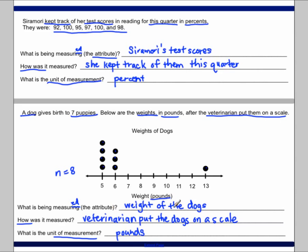So this is pounds. So we're measuring the weight of the dogs. The weight of the dogs was measured by the veterinarian by putting them on the scales. And then the unit of measurement is in pounds. That weight is in pounds. So this is very important because it helps to give a clearer sense of the data as opposed to just looking at numbers.